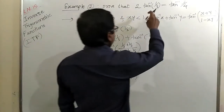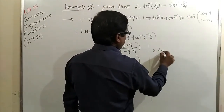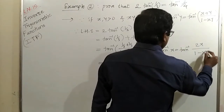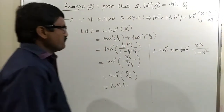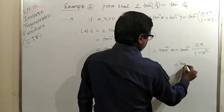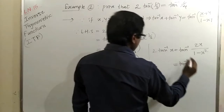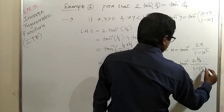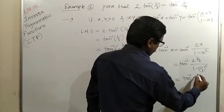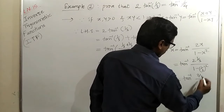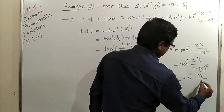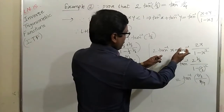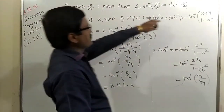Otherwise, for 2·tan⁻¹(x) we can use the formula: 2·tan⁻¹(x) = tan⁻¹(2x/(1−x²)). Using this formula with x = 1/3, we get tan⁻¹(2·(1/3)/(1−(1/3)²)) = tan⁻¹((2/3)/(8/9)), which gives the same result. So we have performed the same computation — one using the addition formula and the other using the double-angle formula.